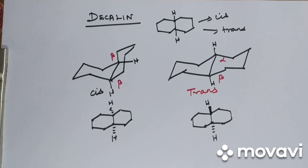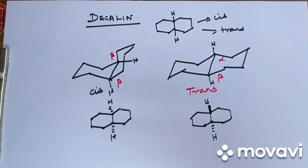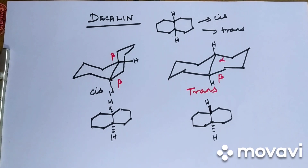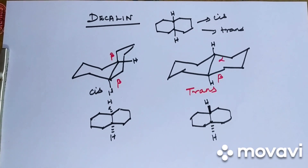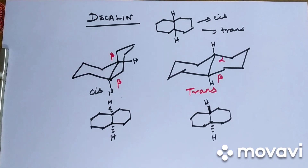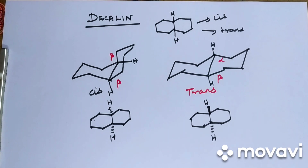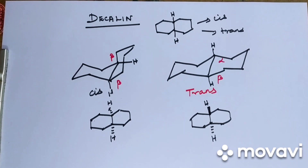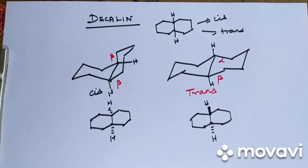In this video we studied about the cyclohexane ring axial and equatorial bonds, alpha-beta representation, cis-trans isomers, and applying this idea to draw cis and trans decalins. Hope you understood. If you have any queries or comments, please write in the comment box. We'll meet in the next video with some other interesting topic — wish you all the very best, thank you.